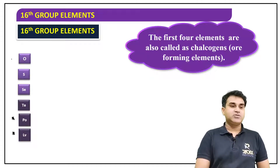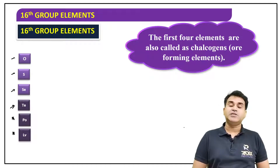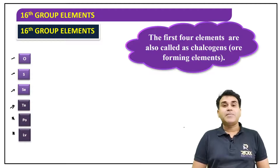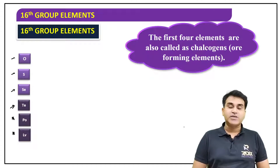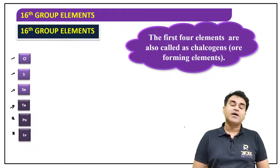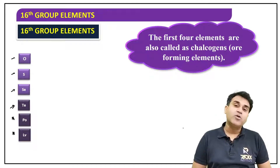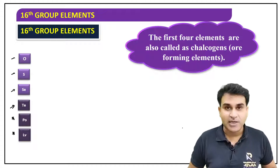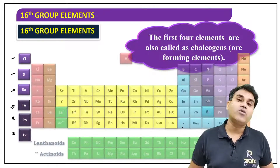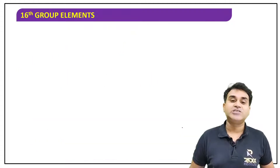The first four elements — oxygen, sulfur, selenium, and tellurium — are called chalcogens. Chalcogen means ore-forming elements. Most of the ores we find are in the form of their oxides and sulfides. So we get maximum ores in the form of sulfur compounds or oxygen compounds — that is why they are called ore-forming elements. Their position in the periodic table is the 16th group.